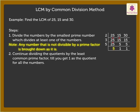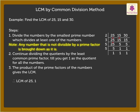Now we have 5 as the dividend. It is a prime number, so divide 5 by 5 to get 1. Now we have 1 as the quotient for all the numbers. Step 3: The product of the prime factors of all the numbers gives the LCM. Thus, LCM = 2 × 3 × 5 × 5 = 2¹ × 3¹ × 5² = 150.